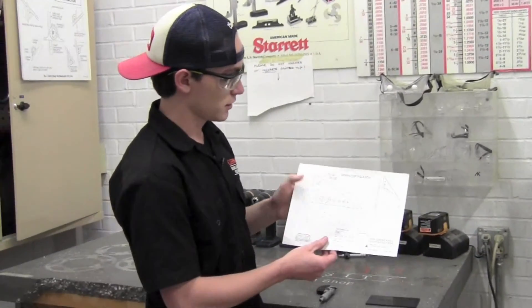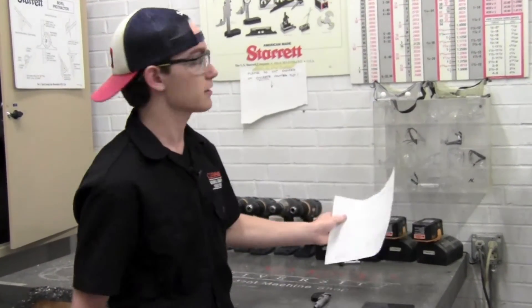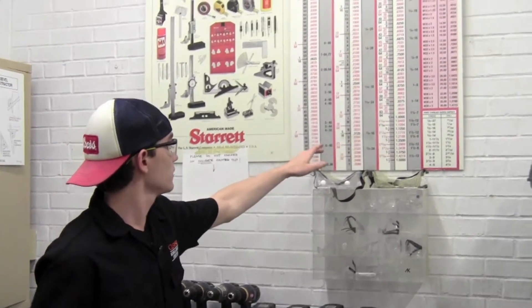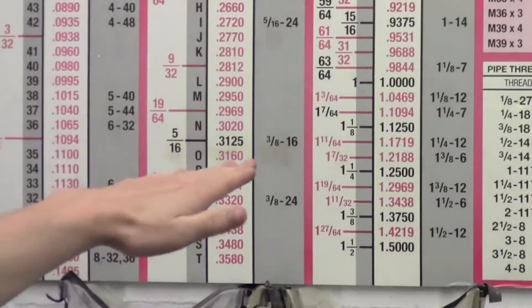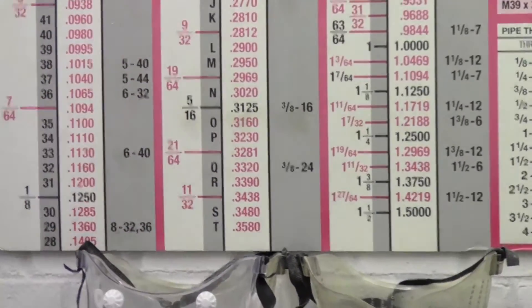So for the tap holes that you're going to have to drill, for example, the 3 1/8 inch drill and tap, 3 1/16, you would refer to the chart again, and you'd look for 3 1/16, which is right here, and you'd move over and see that that would require a 5 1/16 inch drill bit.